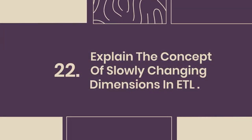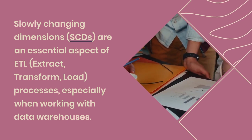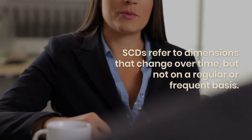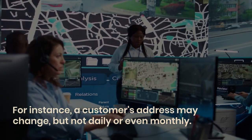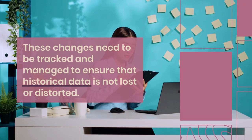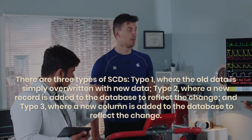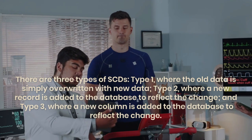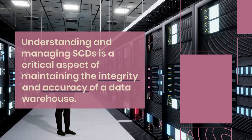Question 22: Explain the concept of slowly changing dimensions in ETL. Slowly changing dimensions (SCDs) are dimensions that change over time but not on a regular basis — for example, a customer's address. These changes must be tracked and managed to ensure historical data is not lost or distorted. There are three types: Type 1 — old data is overridden with new data; Type 2 — a new record is added to reflect the change; Type 3 — a new column is added to reflect the change. Managing SCDs is critical for maintaining data warehouse integrity and accuracy.